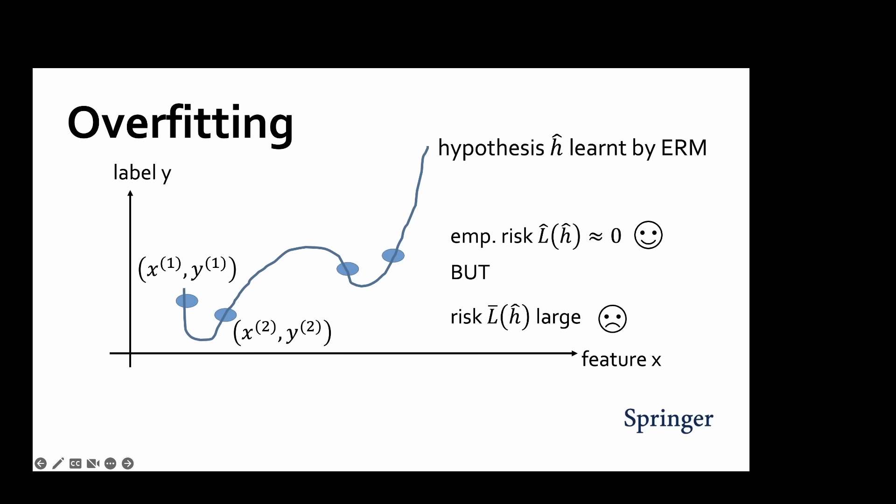This requirement might fail to hold when using a high-dimensional model that easily allows us to find a hypothesis that almost perfectly fits any given data set. Here, the machine learning method might overfit the training data used by empirical risk minimization and learn a hypothesis that performs poorly outside the training set and, in turn, has a large risk.